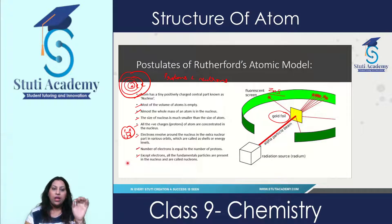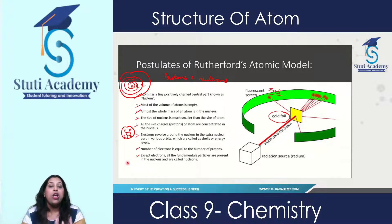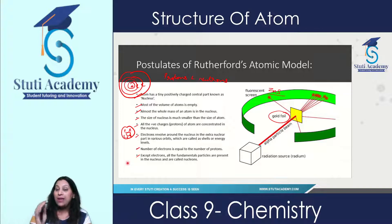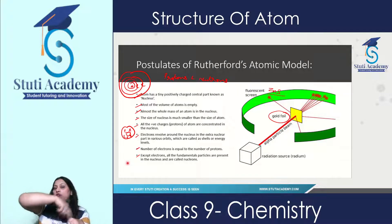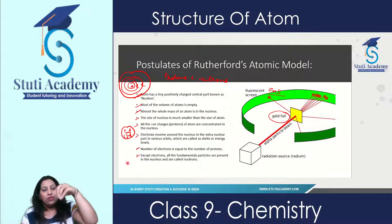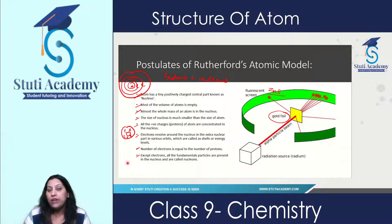The number of electrons is equal to the number of protons, making positive and negative charges equal in magnitude, which makes the atom neutral in nature. Except electrons, all the fundamental particles — protons and neutrons — are present in the nucleus. They are called fundamental particles because they are the base of the atom. We can also compare the structure of the atom with the solar system: the nucleus acts like the sun, containing protons and neutrons, and the electrons act like planets revolving in orbits — those orbits are known as energy shells. These are the postulates of Rutherford's model of an atom.